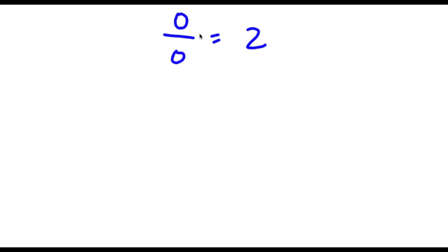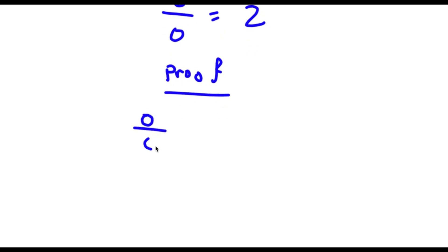All right, so we have 0 over 0 is equal to 2. For my proof, I'm going to first start with 0 over 0. Well, 0 is the same thing as 1 minus 1, so now I'm going to have 1 minus 1 over 1 minus 1.